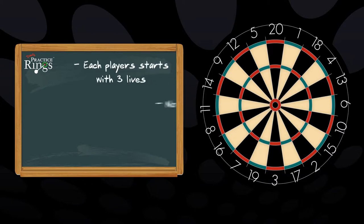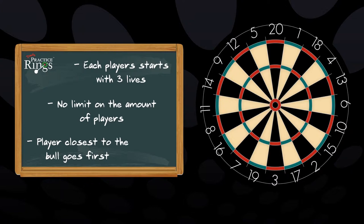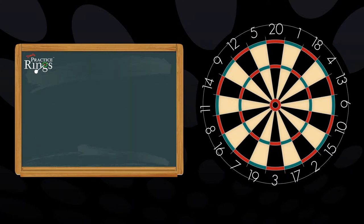Eliminator. Each player starts with three lives. There is no limit on the amount of players. The player who lands the dart closest to the bull goes first.